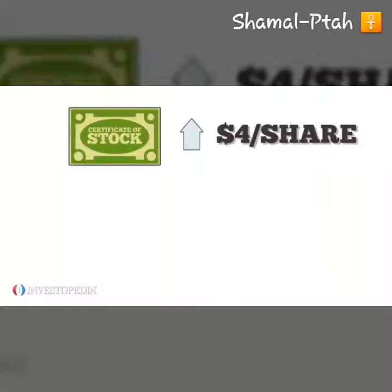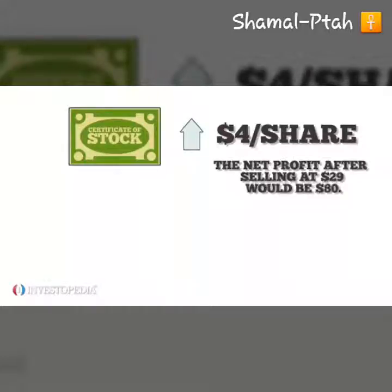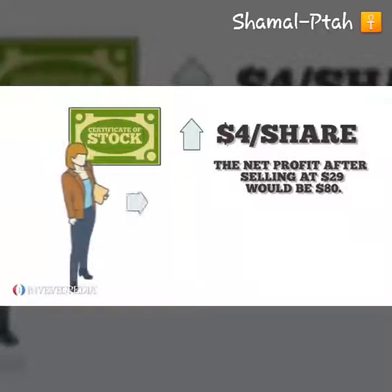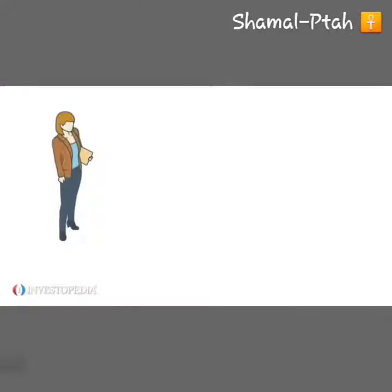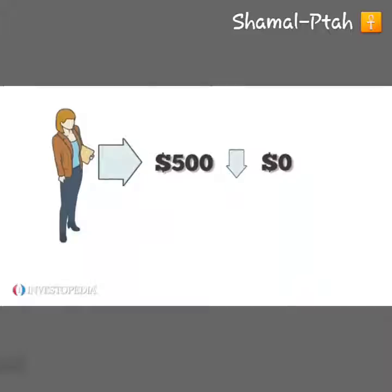If XYZ stock goes up $4 per share, the net profit after selling at $29 would be $80. The investor paid $500 for it, making the risk-reward ratio 80 divided by 500, or 0.16 — that is, 0.16 to 1. Most sensible investors will not let their initial $500 fall to zero; they'd set a stop-loss at a price that would limit their risk.